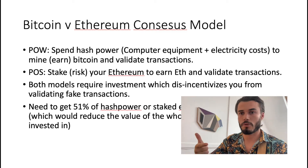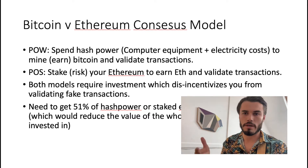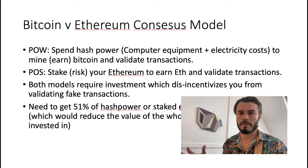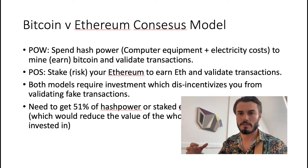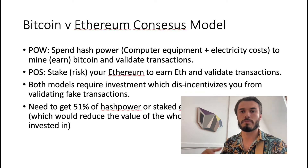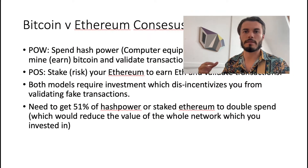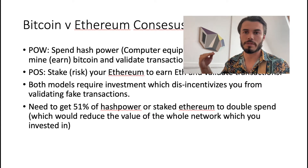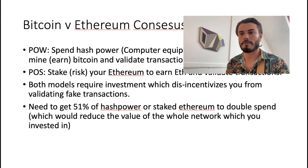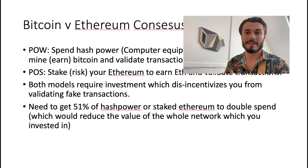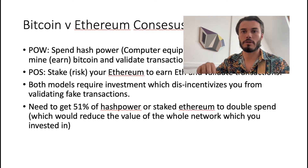With proof of stake you don't have to buy equipment anymore — once Ethereum fully moves to proof of stake, all you have to do is stake your Ethereum. You just risk your Ethereum without any other investment, which also disincentivizes putting in fake transactions or gaming the system. So those are the two ways these cryptos come to consensus. To attack the system with proof of work you need 51% of the hash power, whereas with proof of stake you need 51% of the total staked Ethereum to double-spend or push fake transactions through.